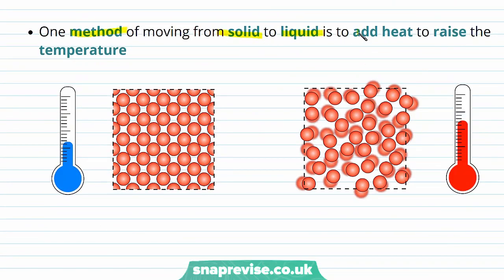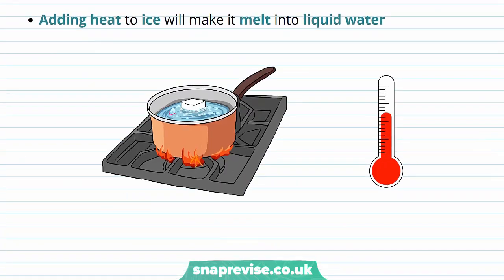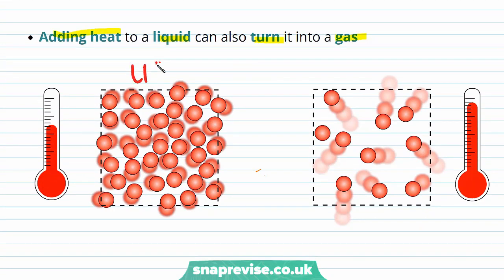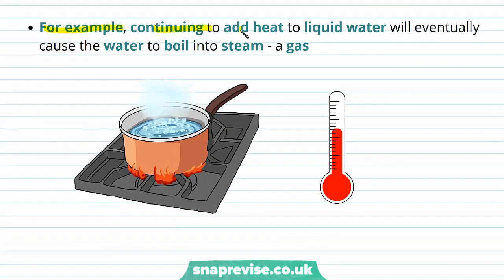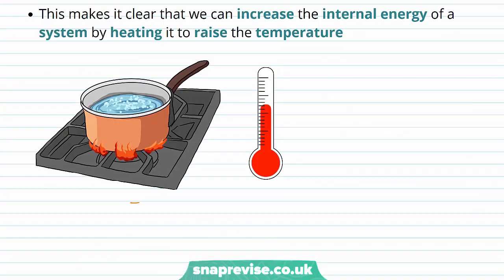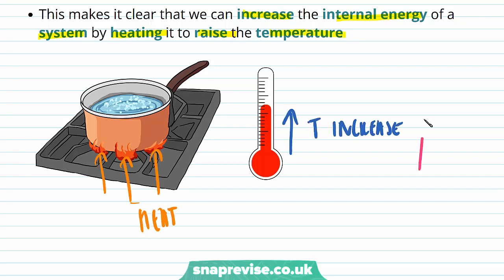One method of moving from solid to liquid is to add heat to raise the temperature. So when we add heat to a solid, we can change it to a liquid — by increasing the temperature we have changed from a solid to a liquid. Adding heat to ice will make it melt into liquid water, as seen in a saucepan where solid ice has been melted to liquid water due to heat being added. Adding heat to a liquid can also turn it into a gas — continuing to add heat to liquid water will eventually cause the water to boil into steam. This makes it clear that we can increase the internal energy of a system by heating it to raise the temperature, causing an internal energy increase.